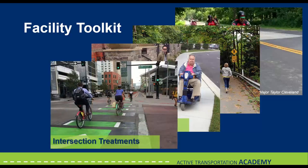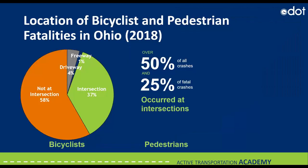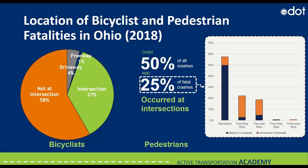And then lastly, we have intersection treatments. Designing for people walking and biking at the intersection is critical for transportation safety. In Ohio, we have 37% of pedestrian crashes occurring at intersections. These are pretty sobering numbers, and they really speak to the need to design our intersections so that people walking and biking are not risking their lives every time they cross the street. In the next few slides, I'll show you examples of intersection design that improves bike-ped safety.